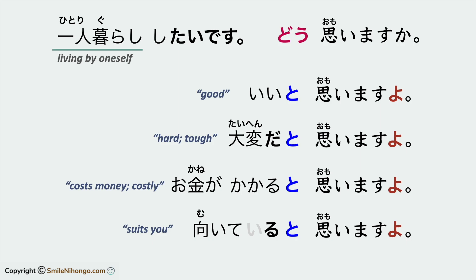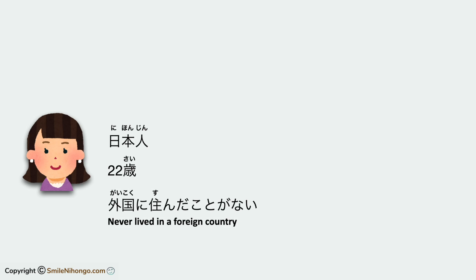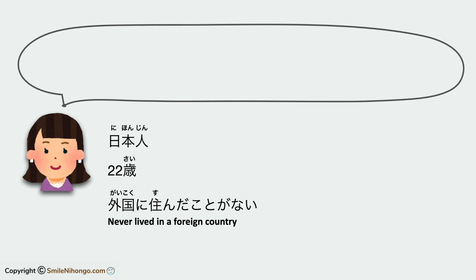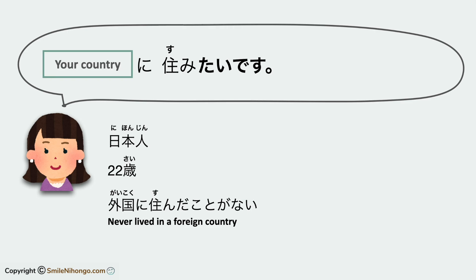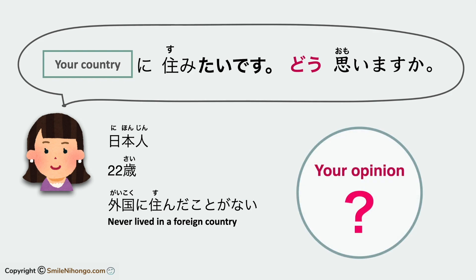Before we wrap up today's lesson, let's see if you can do this. Imagine you have a friend in Japan — she is Japanese, 22 years old, and has never lived in a foreign country. She says to you: 'Your country に住みたいです。どう思いますか?' You have to put the name of your country in the blank. For example, if you live in Australia, she says: オーストラリアに住みたいです。どう思いますか? What do you say in response? You can leave your own opinion in the comment area if you want.